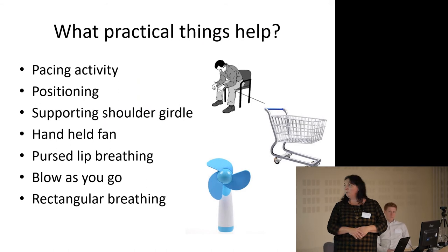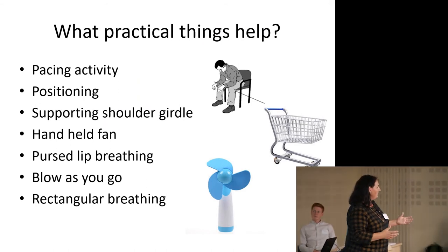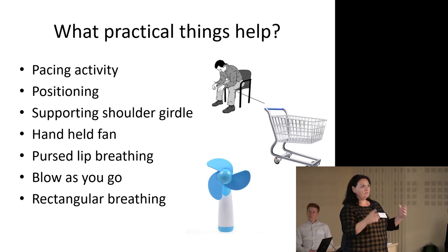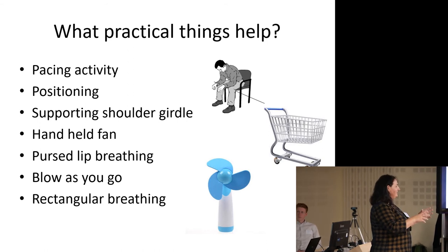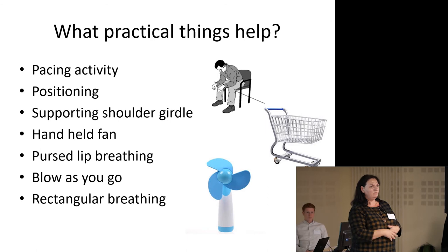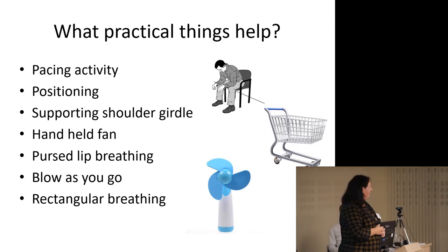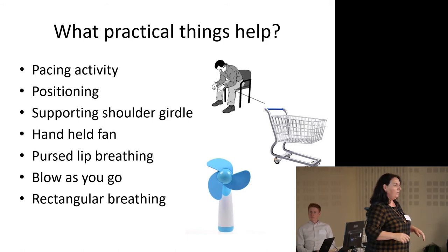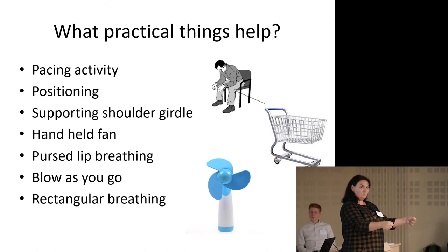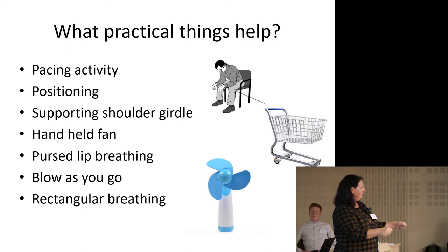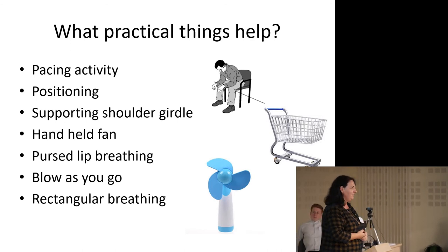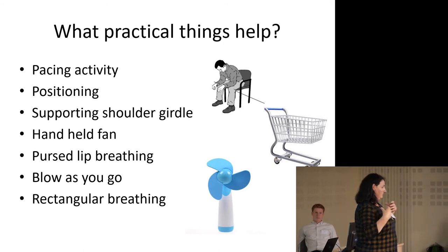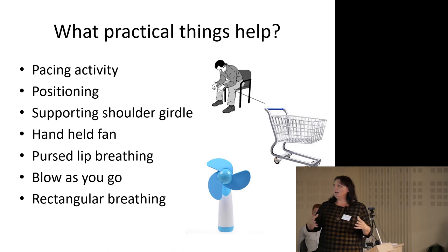So what practical things help? Pace and activity is a huge thing. I think women sometimes find it more difficult because they've always been used to doing all the housework, and they become so frustrated when they're not able to do the same things. Positioning matters too — people adopt the tripod position; you'll see them lean on a wall or use a shopping trolley to support their shoulder girdle. Rollator frames are really good for giving that support. So that's really useful.